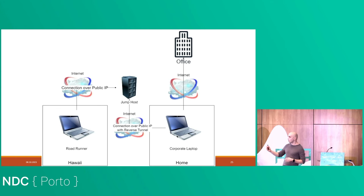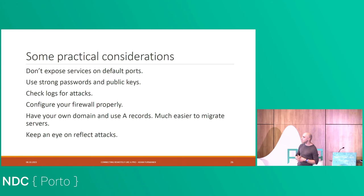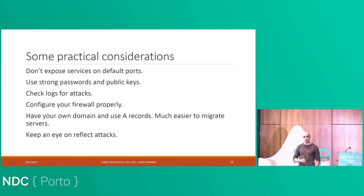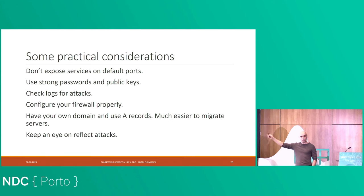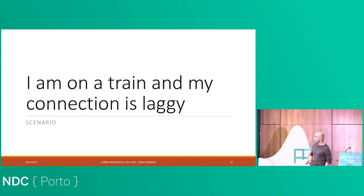Before moving on to when this isn't possible, let's make our connection more reliable. Some practical security considerations: your jump host is exposed to the public internet and people will try to hack it. If you have RDP on any machine exposed to the public internet, check your event log — you'll likely see 20,000 wrong authentication attempts every day. Use strong passwords, configure your firewalls, and keep an eye on reflection attacks where someone uses your machine to reflect traffic elsewhere via DNS or Active Directory.